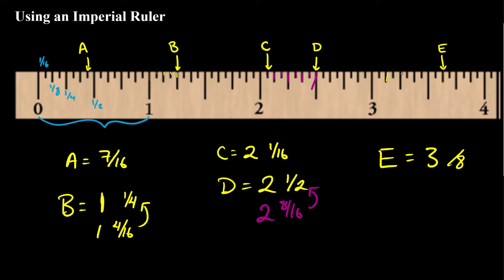So one, two, three, four, five. So three and five eighths. Again, we could have counted how many sixteenths that was. One, two, three, four, five, six, seven, eight, nine, ten. So three and ten sixteenths. But ten sixteenths reduces to five eighths.